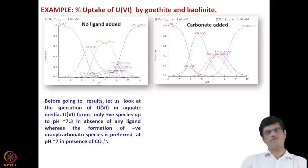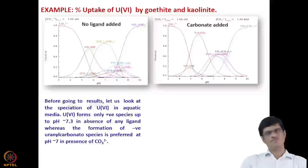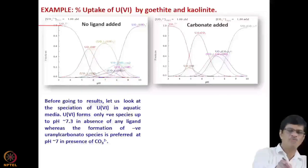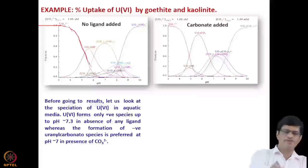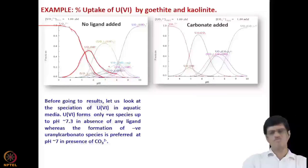Now we will take an example: Uranium(VI) uptake studied with goethite and kaolinite. We should first understand the speciation diagram of the uranium ion. As mentioned in the actinide chemistry course, the uranium ion forms very strong complexes with carbonate as well as hydroxide. Without any carbonate present, the uranium ion exists at very low pH values and decreases as monohydroxy and dihydroxy species form, along with different polymeric species.